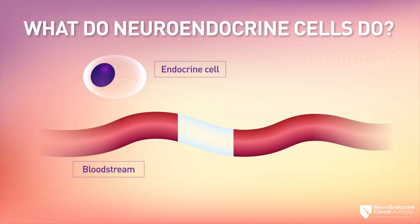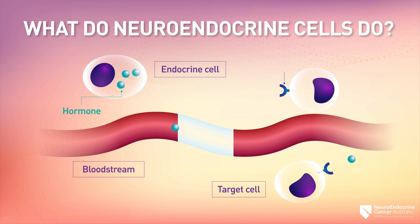Neuroendocrine cells make and release hormones and similar substances, such as peptides, in response to neurological or chemical signals. The hormones then enter the blood and travel throughout the body to other cells. The hormones attach to specific receptors on target cells, which cause changes in the cells and what they do.